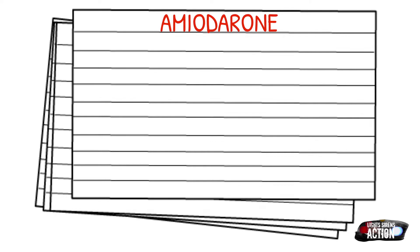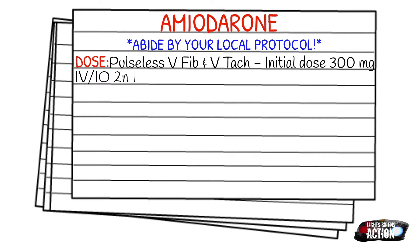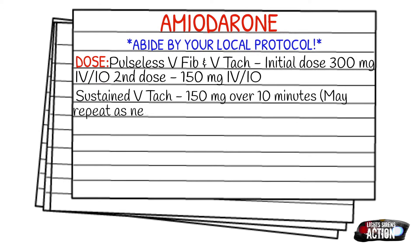Before we get into dosages, please abide by your local protocol — just because my protocol is one thing does not mean yours is the same. For pulseless V-fib or V-tac, the initial dose is 300 milligrams IV or IO during cardiac arrest, alongside epinephrine and oxygen. Your second dose, if still in pulseless V-fib or V-tac, is 150 milligrams IV or IO. For sustained V-tac or V-tac with a pulse, give 150 milligrams over 10 minutes, repeatable as needed up to 15 milligrams per kilogram per day.